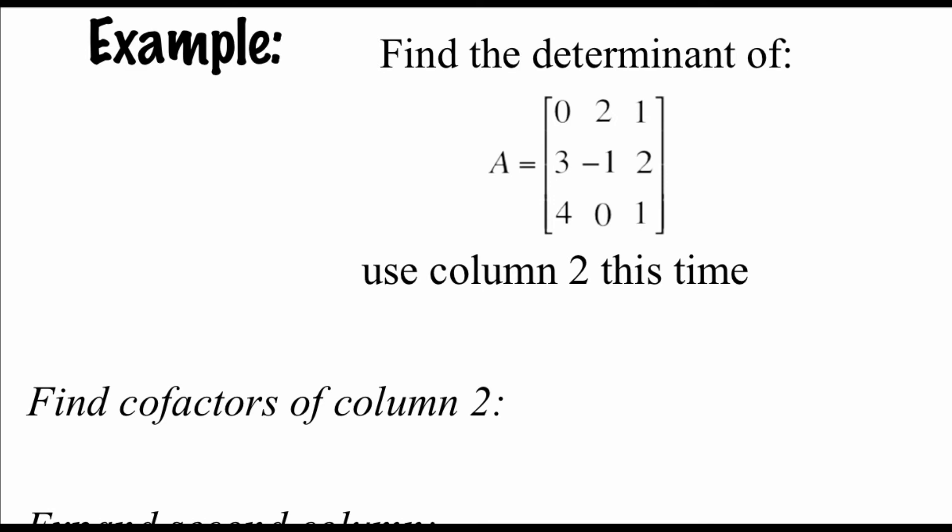Just to show you that we're going to get the same answer either way, I'm going to do that same exact example, but this time I'm going to use the second column. So we're going to cross that thing off. We're going to start finding the cofactors, but in order to do that, we have to find the minors. So crossing off that middle column, let's cross off the top row and do the determinant. So 3 times 1 is 3, minus 8, we get negative 5. If we go middle column, and if we cross off the middle row, 0 times 1 is 0, minus 4, we get negative 4.